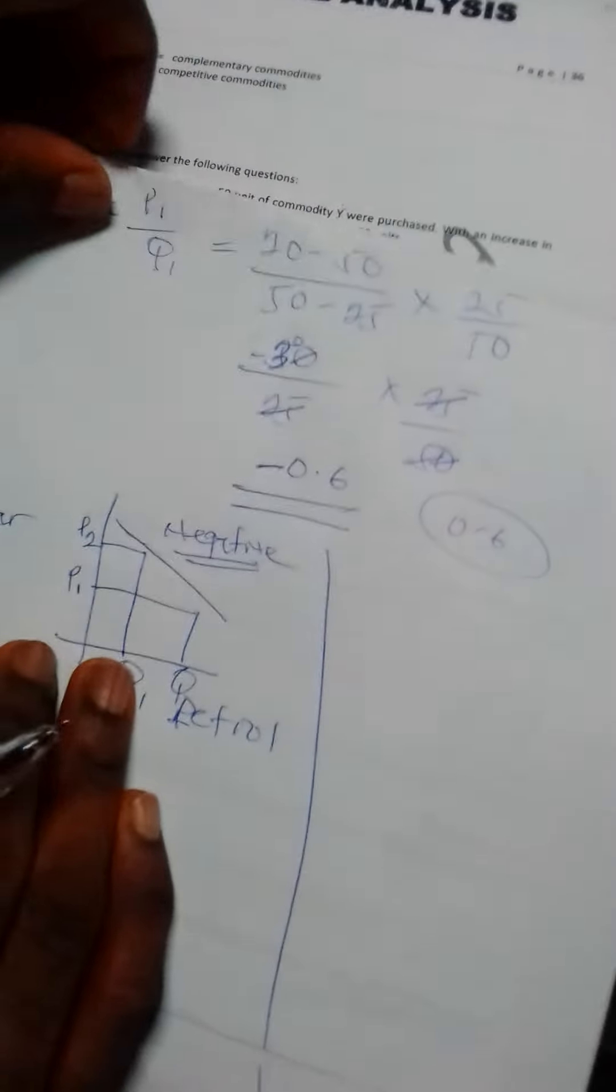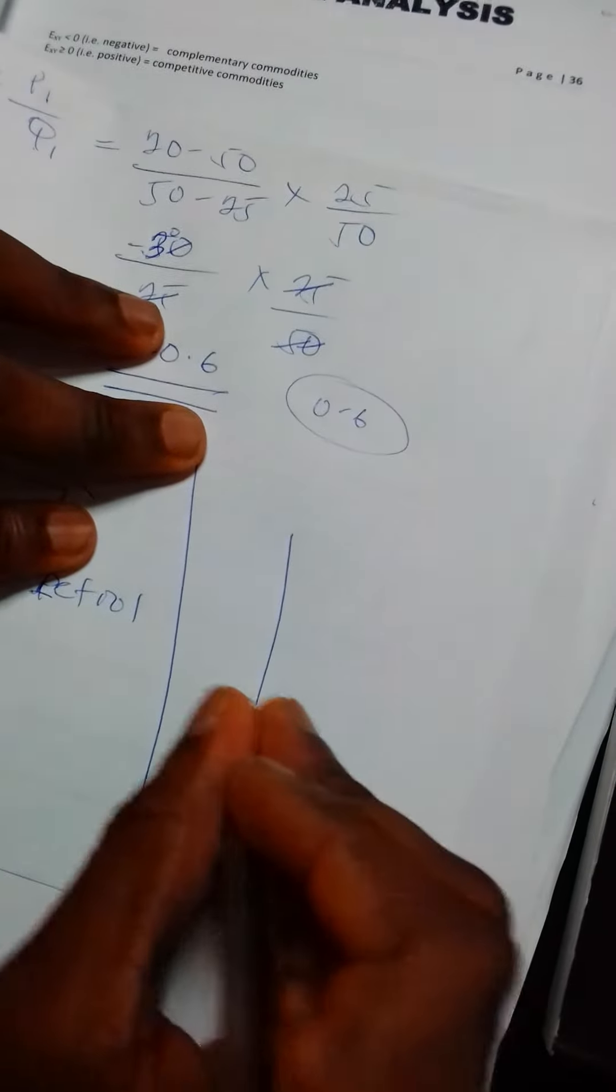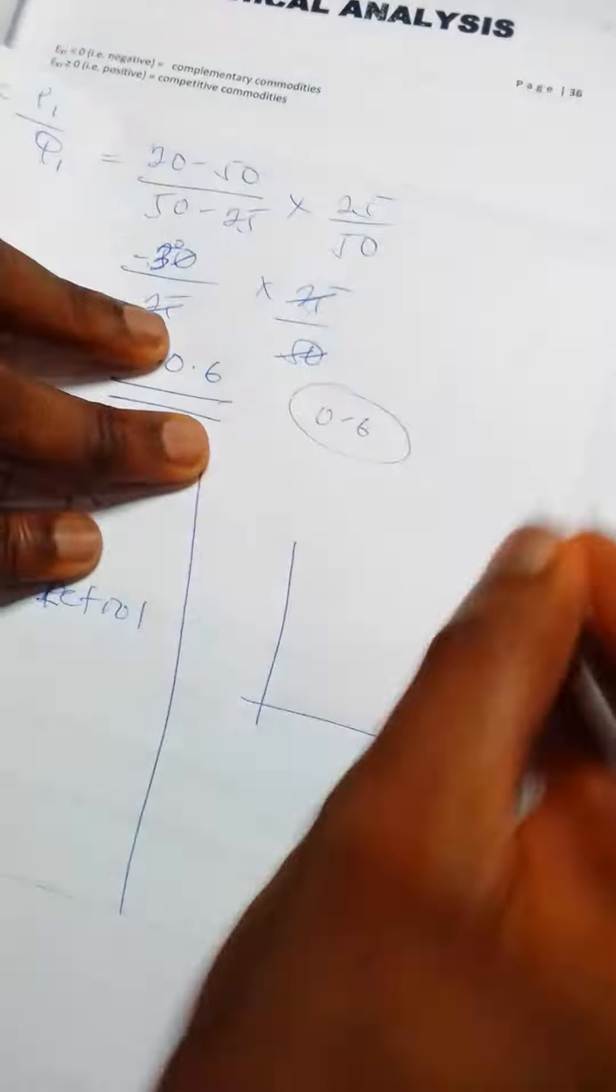The answer would have been substitute because the cross elasticity of demand for competitive goods is positive.